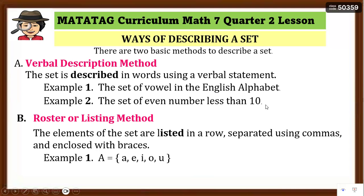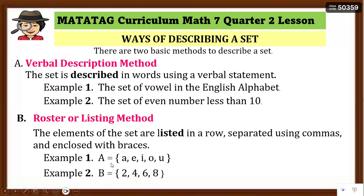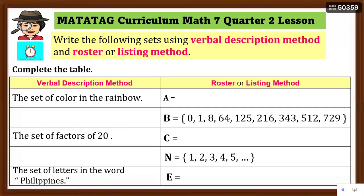Another example: the set of even numbers less than 10 — verbal description method. Even numbers are divisible by 2. In roster method, Set B = {2, 4, 6, 8}. You can convert from description to listing or from listing to description. Let's now practice writing sets using both methods.